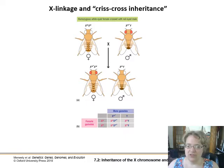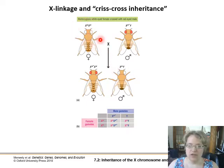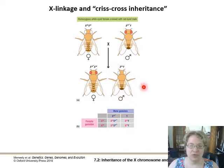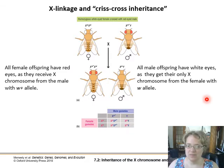You also see crisscross inheritance, where the trait switches between generations. If you have a white-eyed female crossed with a regular male, the phenotype appears to cross to the other sex: all males must get their X from mom, so in this case all males will carry the white mutation. In the next generation the mutation appears to pop out in males. Meanwhile, daughters get a dominant wild-type allele from dad, which overrides the white mutation.